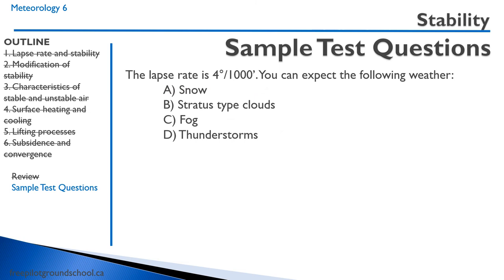Practice question: The lapse rate is four degrees per thousand feet — you can expect the following weather. The dry adiabatic lapse rate is three degrees per thousand feet, so four degrees per thousand feet is greater than the dry adiabatic lapse rate, meaning the air will be unstable. Which weather phenomenon is associated with unstable air? A — snow, not really. B — stratus clouds, not at all. C — fog, not at all; that would be stable. D — thunderstorms. Thunderstorms is the correct answer. You have unstable air when the lapse rate is greater than the dry adiabatic lapse rate.